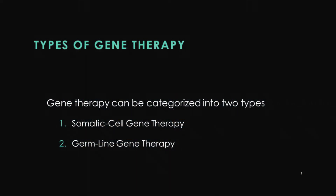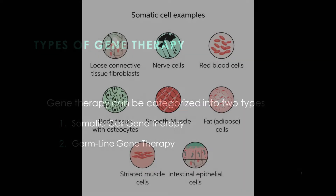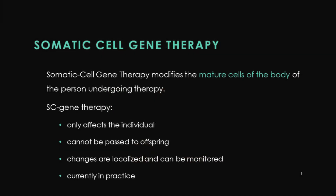There are two types of gene therapies: somatic cell gene therapy and germline gene therapy. Somatic cell refers to any cell of your body, while germline cells are your sex cells — sperms and eggs.